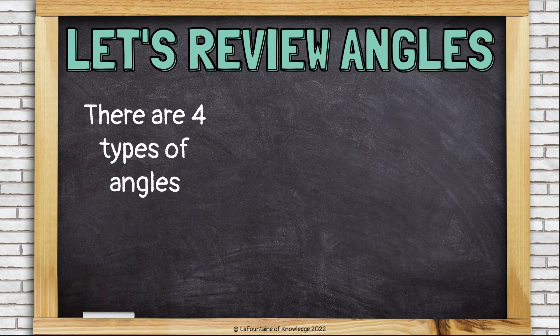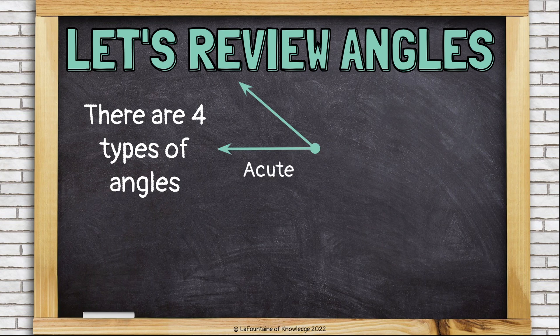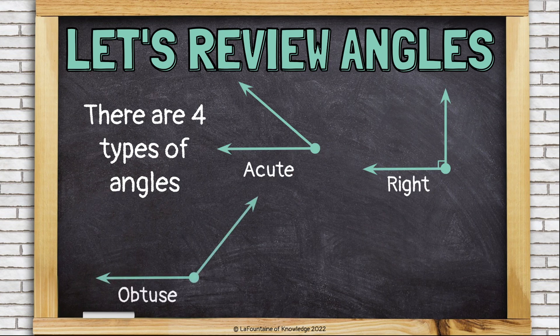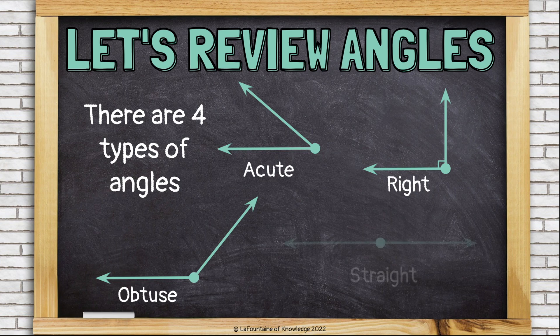There are four types of angles. Acute angles measure less than 90 degrees. Right angles measure exactly 90 degrees. Obtuse angles measure more than 90 but less than 180 degrees. And straight angles measure exactly 180 degrees.